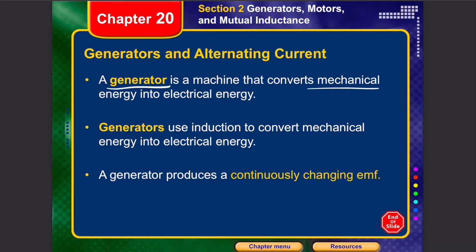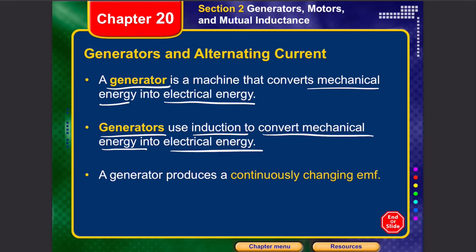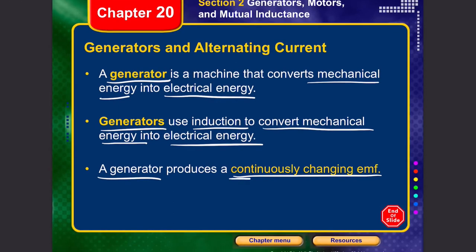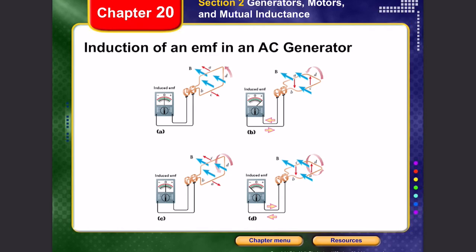A generator is a machine that converts mechanical energy into electrical energy using induction. A generator produces a continuously changing EMF. When a coil rotates inside a magnetic field, the field produces a force on each end of the wire — pushing one side down and the other up — creating rotational motion. This rotation continuously changes the EMF.